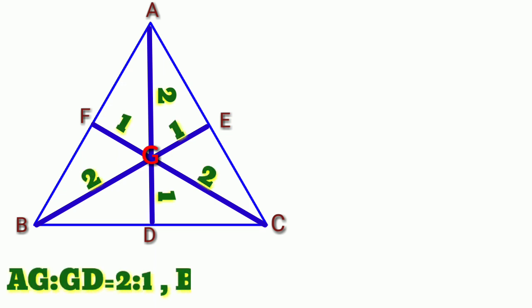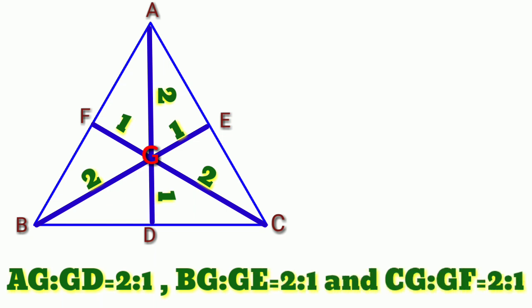AG to GD is equal to 2 to 1. BG to GE is equal to 2 to 1. CG to GF is equal to 2 to 1. From above ratios,